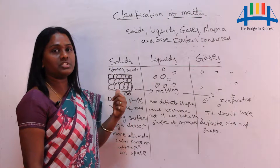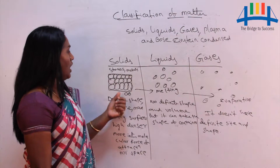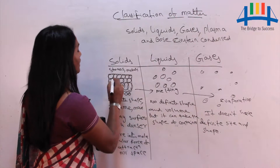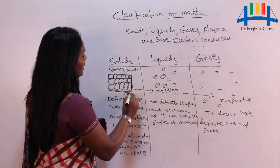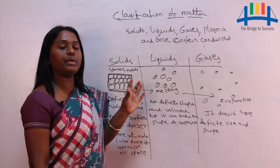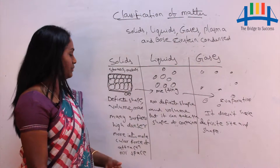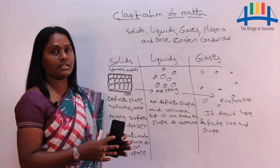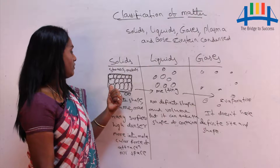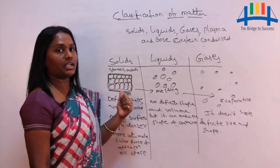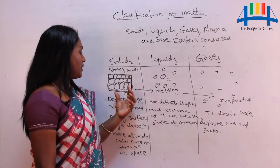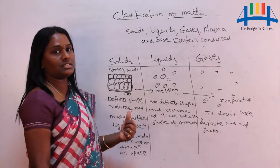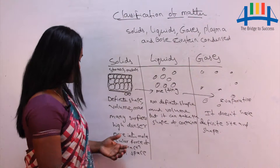Solids occupy some space in the atmosphere. If you observe a solid, there are many free surfaces — this surface, that surface, and so on. Solids are very dense. When there is definite shape and size with nil space between particles, the solid is more dense or thicker in nature.